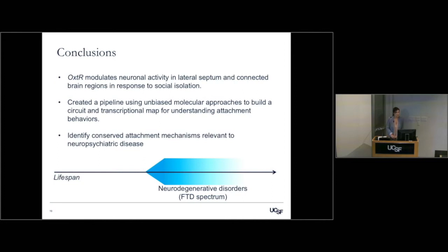I've also created a pipeline using unbiased molecular approaches to build, from the ground up, a circuit and transcriptional map for understanding attachment behaviors. And I'm interested in looking at the prairie-meadow comparison at the genome level to understand how these circuits are actually hardwired into the brain to drive attachments in the prairie vole specifically.